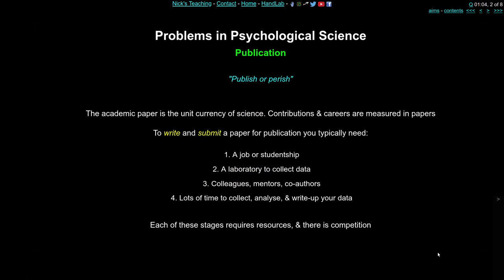The first domain of problems is publication. There's an often-quoted phrase: publish or perish. That's the idea that to be a scientist you really need to publish. You can't get away without publishing your work, you can't remain an academic, and if you finish your PhD without any papers ready to publish it's very hard to get onto the job market. The academic paper is like the unit of currency, the coin of science.